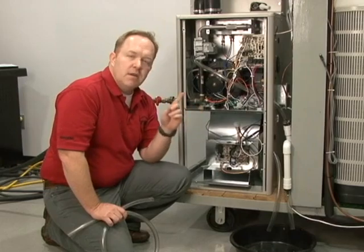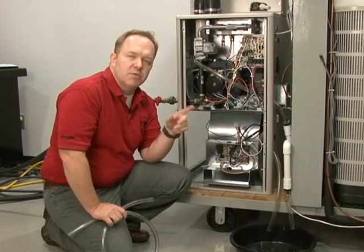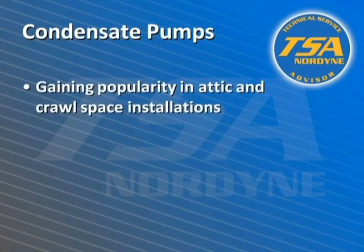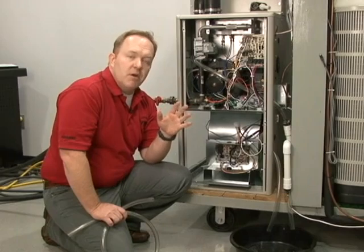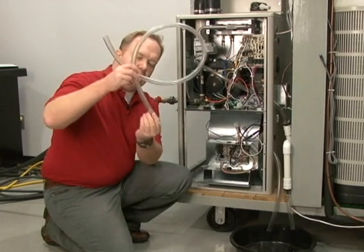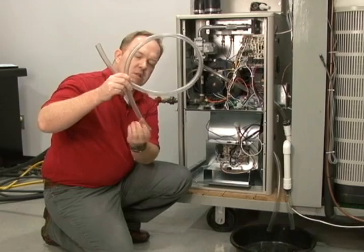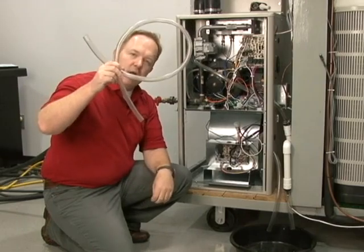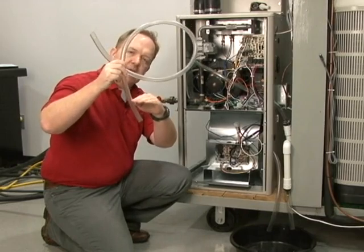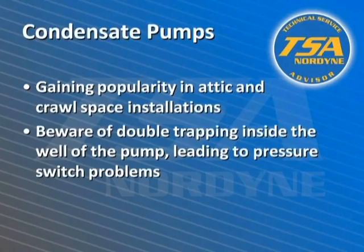A very popular accessory being used these days with high efficiency furnaces is condensate pumps, especially in attic or crawl space installations. Condensate pumps work very well, but one thing you need to be aware of is that if you take the drainage tubing of your furnace and put it into the well of the pump, if that tubing were to go below the water level inside the pump, the well of the pump itself just became a double trap and you will get a pressure switch to open up on you.